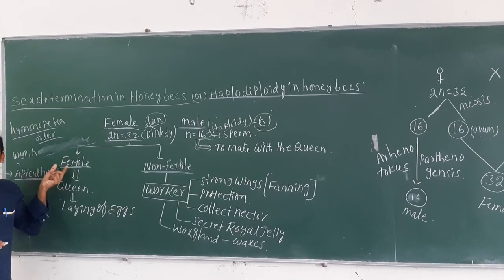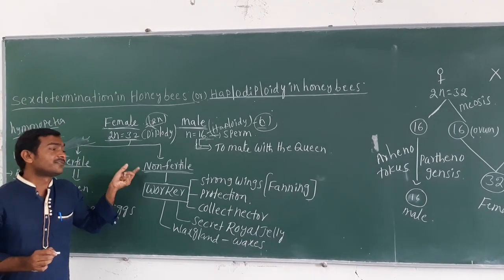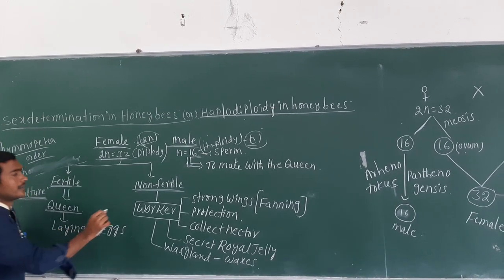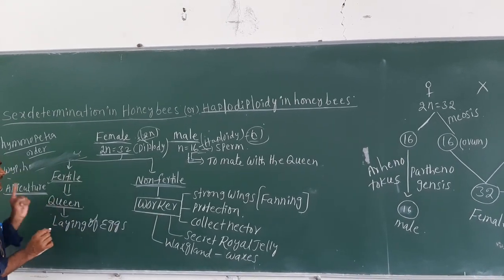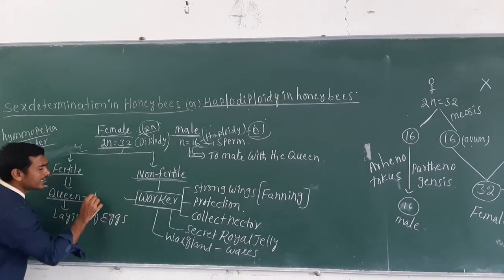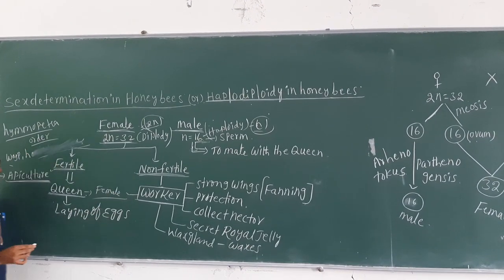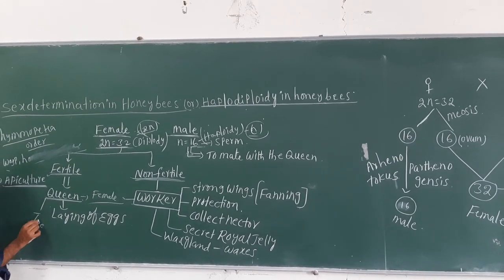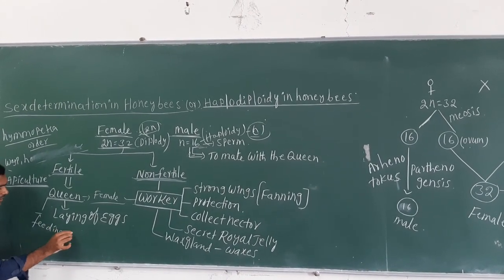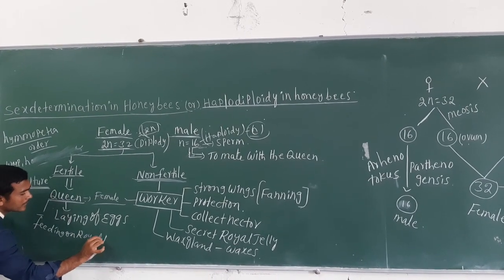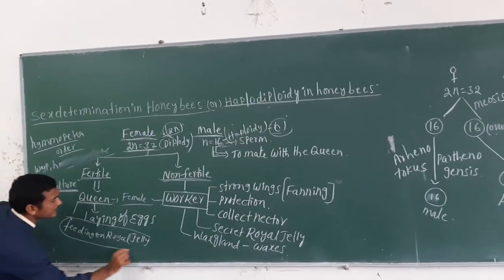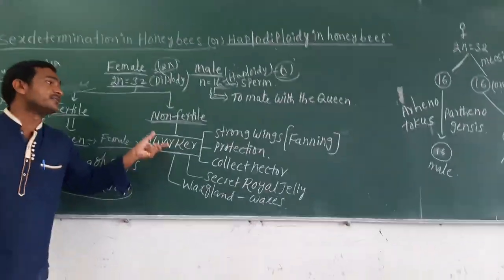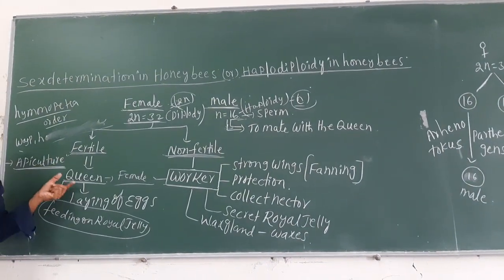The fertile female is the one that involves fertilization; the non-fertile one does not involve fertilization. The fertile one is the queen bee and the non-fertile one is the worker bee. The queen bee feeds on royal jelly, making her fertile, while the worker bee does not take royal jelly.